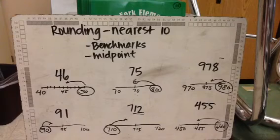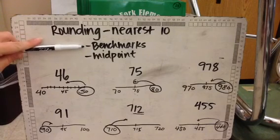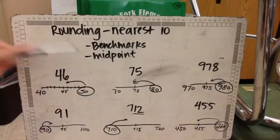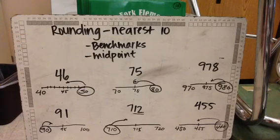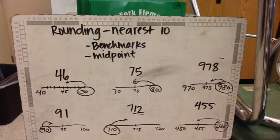So here's lots of examples of two-digit and three-digit numbers where we're rounding to the nearest ten. You want to think about your benchmarks first, then your midpoint, and then think about where your number is in relationship to that midpoint. Is it before, after, or right on it? So use this when you are rounding to the nearest ten on the number line.